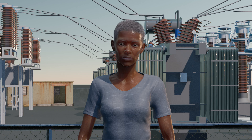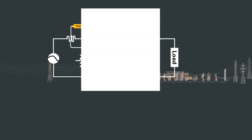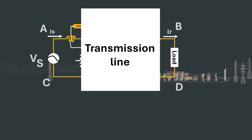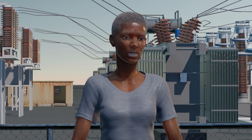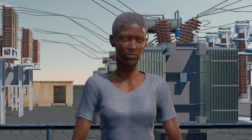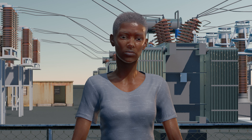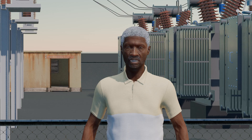The ABCD parameters are also known as transmission line parameters or chain parameters. These parameters are used to characterise linear electrical networks, particularly transmission lines, because they provide a convenient way to analyse the behaviour of these lines in terms of voltage and current.